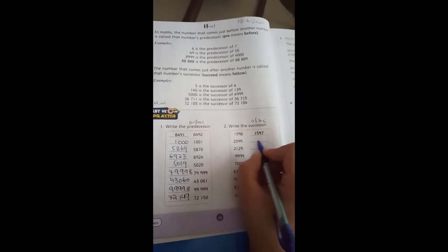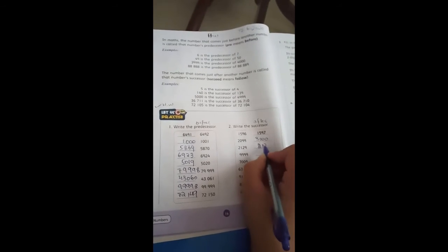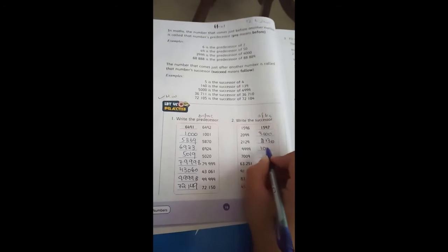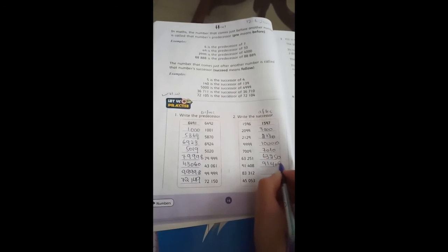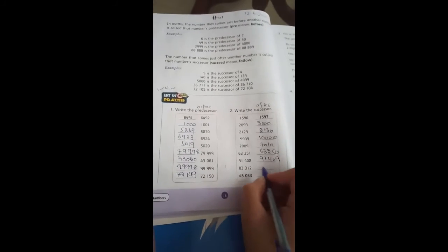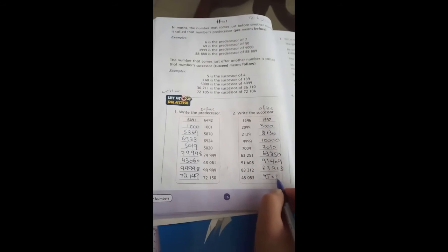If you see the successor: 2999, which is 3000. 2129, which is 2130. 10709, which is 10710. 63250, which is 63251. 91409, which is 91410. 83312, which is 83313. 45053, which is 45054.